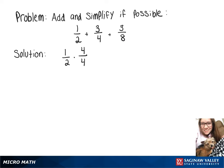So I can give 1 half a denominator of 8 by multiplying by 4 over 4, giving us 4 over 8, and I can give 3 over 4 a denominator of 8 by multiplying by 2 over 2, which gives us 6 over 8.